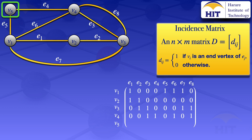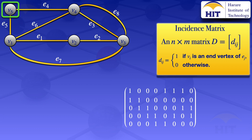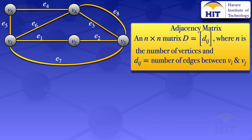Lastly, vertex v5 is an end vertex for edges e4 and e5. So we place ones at e4 and e5, and zeros on all other elements. That 5 by 8 matrix is our incidence matrix for the graph appearing on the left. I will now move on to the adjacency matrix.